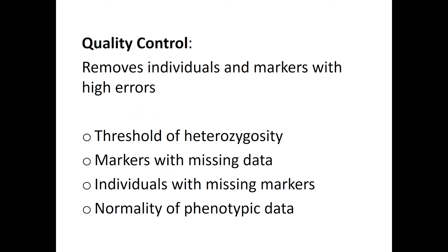Quality control is done on this data to remove individuals and markers with high error rates. This can be done by removing individuals that do not achieve the threshold of heterozygosity, depending on whether the population is cross-pollinated or open-pollinated. It's also done by removing markers with high missing data, removing individuals with high missing markers, and ensuring that your phenotypic data follows a normal distribution.